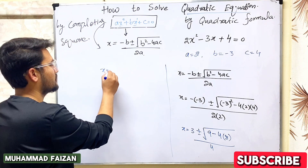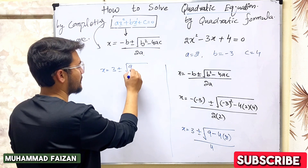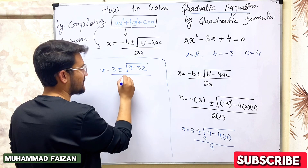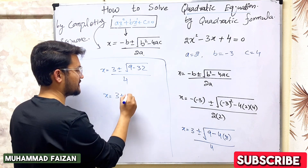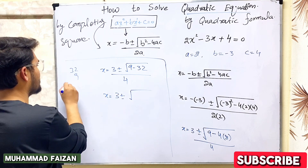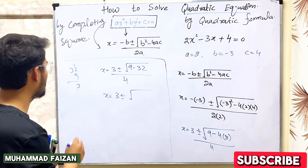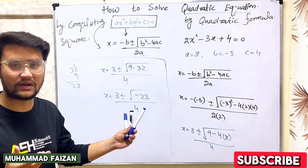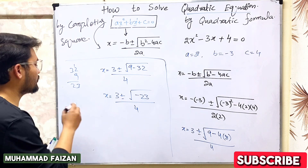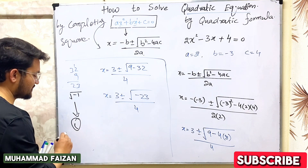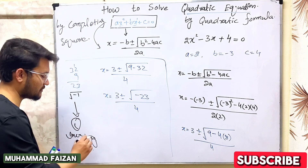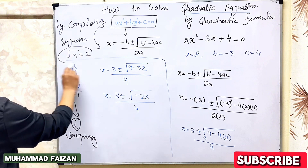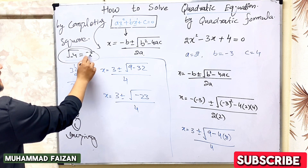So x is equal to 3 plus or minus the square root of 9 minus 16, which gives a negative value under the root. The square root of minus 1 is equal to iota, which is an imaginary number. The root of a negative number involves iota, and the answer is defined in terms of imaginary numbers.